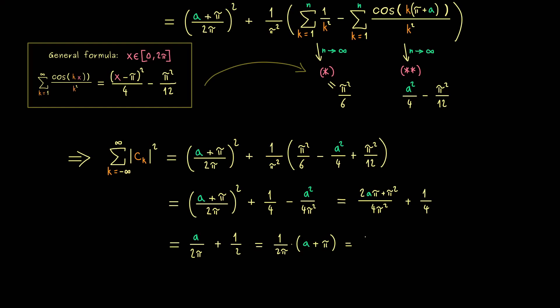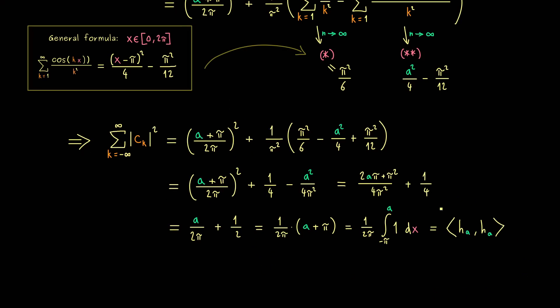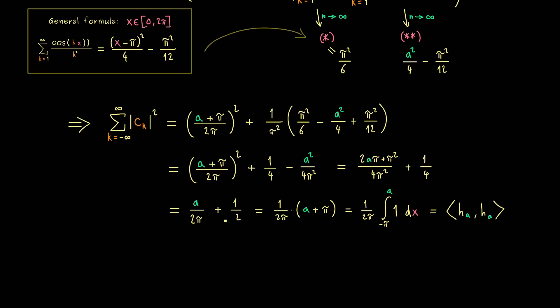And now one nice way to write it would be 1 divided by 2 pi times a plus pi. Because then you could say this is simply the integral from minus pi to a of the constant 1. And there you see with the factor in front, this is exactly how we have to find the inner product. Indeed it's the inner product h_a with h_a. And there we know this is exactly the norm of h_a squared. So we get that for h_a, no matter what a is, Parseval's identity holds.